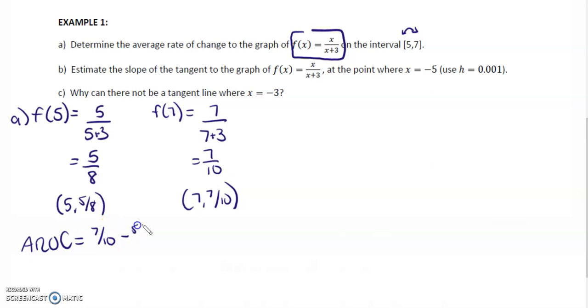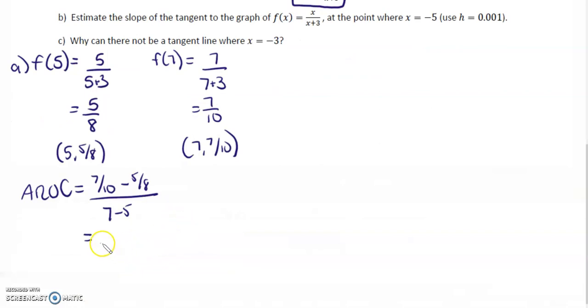We're going to find the slope between these. So we'll do 7 over 10 minus 5 over 8 over 7 minus 5. 7 over 10 minus 5 over 8 gives me 3 over 40. And if your calculator is good, you can just do this all in your calculator. I get 3 over 80, which as a decimal is 0.0375.